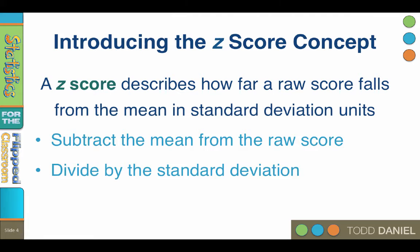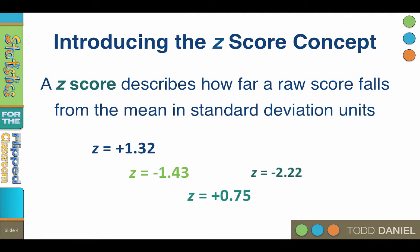And here is what z-scores look like. Notice what they all have in common. They all begin with z. They all have a sign, positive or negative, and they all have three digits.